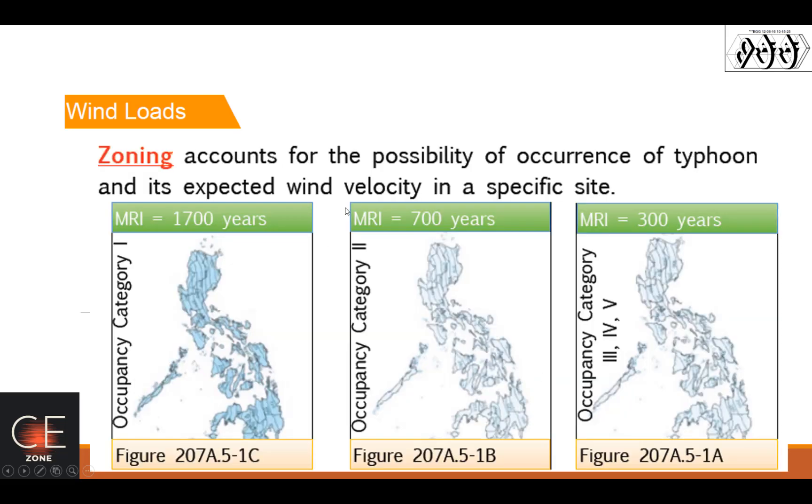The Zoning accounts for the possibility of occurrence of Typhoon and its expected wind velocity in a specific site. This is based on the Occupancy Category.